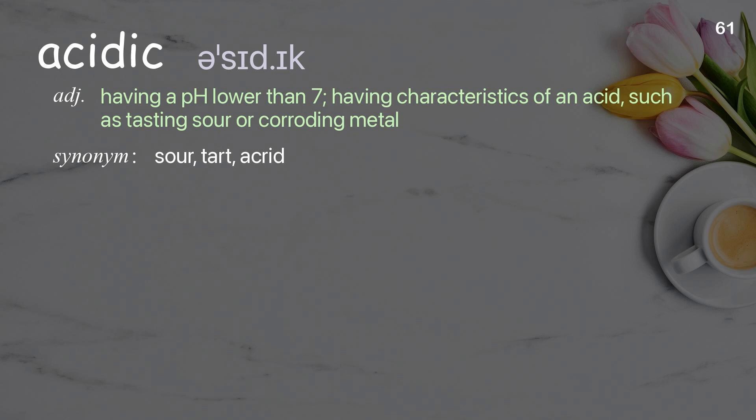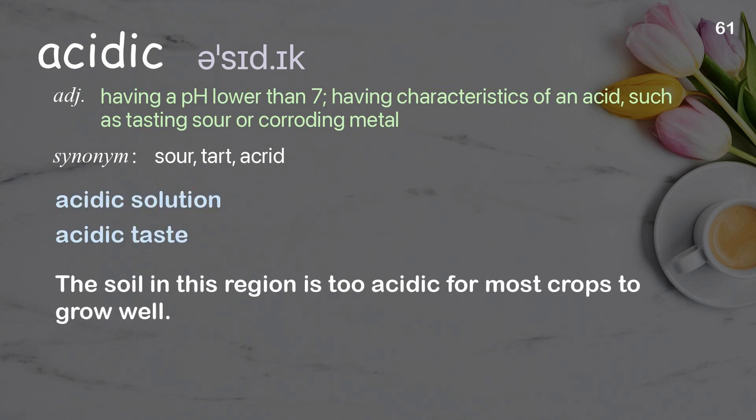Acidic. Having a pH lower than 7; having characteristics of an acid such as tasting sour or corroding metal. Examples: acidic solution, acidic taste. The soil in this region is too acidic for most crops to grow well.